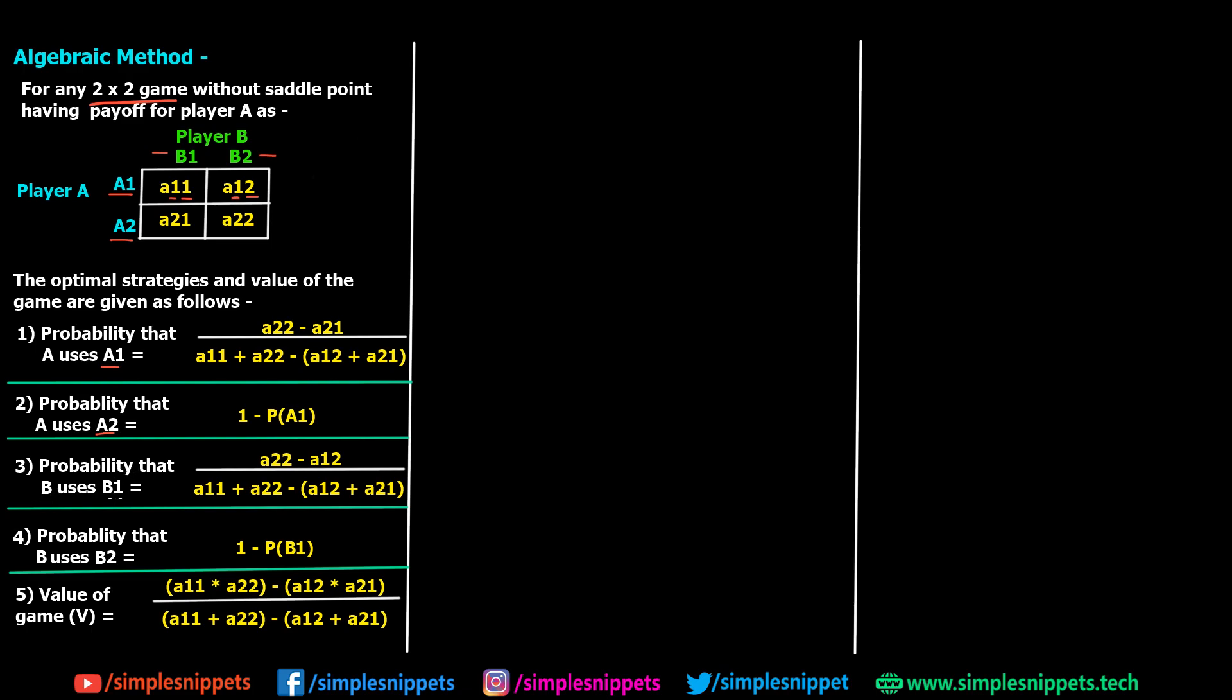Similarly, we have the probability for B using B1. Player B using his first B1 strategy is given by A22 minus A12. In the first formula we had A22 minus A21, here we have A22 minus A12, and that's the only difference, otherwise the denominator is the same. Probability of B using B2 is going to be 1 minus P of B1.